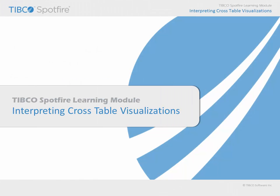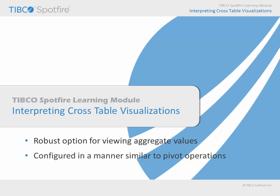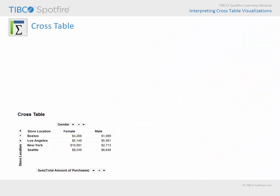In this learning module, we will consider the ways in which Spotfire crosstables may be used to visualize data, as this is one of the options for calculating and viewing aggregate values based upon the underlying raw data table. It is the most flexible and robust option for doing this, because it is configured in a manner similar to a pivot operation. The crosstable allows you to select categorical variables to define the rows and columns of the crosstable.